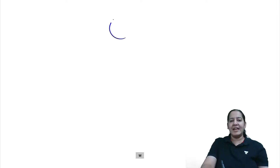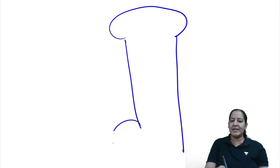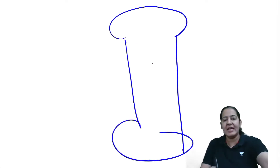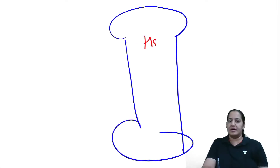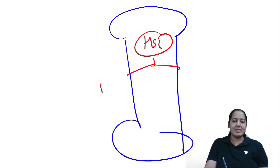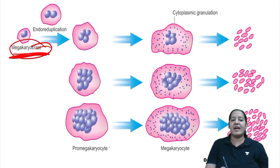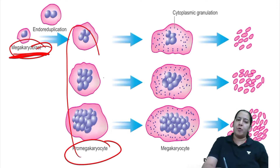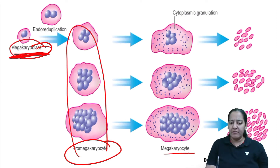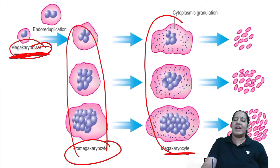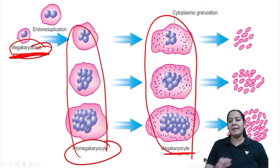Inside the bone marrow, the first cell is the hematopoietic stem cell, which gives rise to all other cells. From the hematopoietic stem cell, myeloblast and lymphoblast are formed. From myeloblast, megakaryoblast is formed. Megakaryoblast gives rise to promegakaryocyte, and promegakaryocyte gives rise to megakaryocyte. Ultimately, megakaryocyte gives rise to platelets.